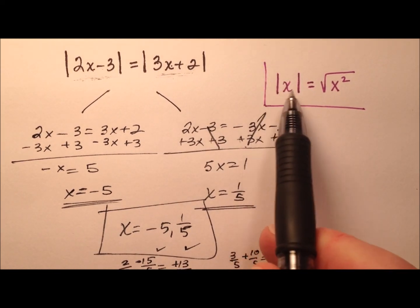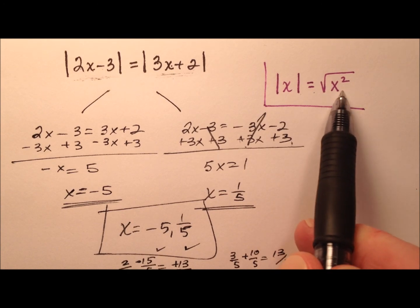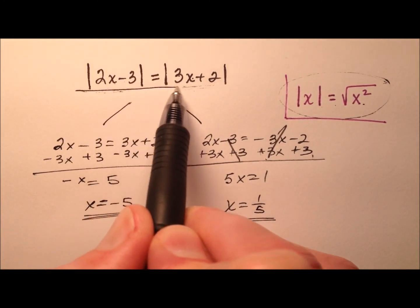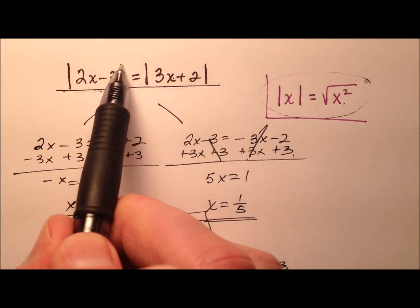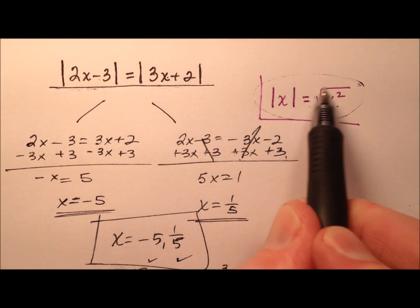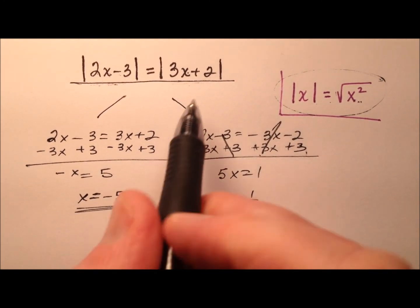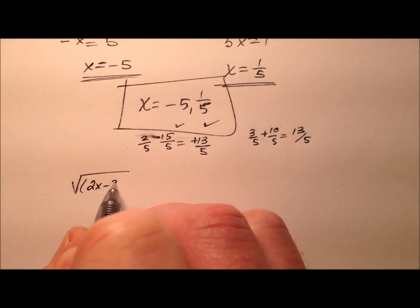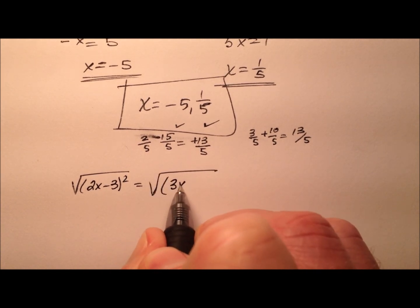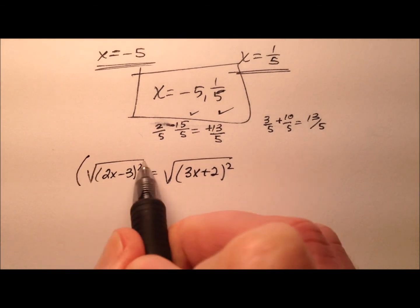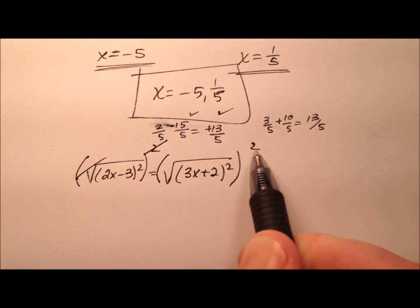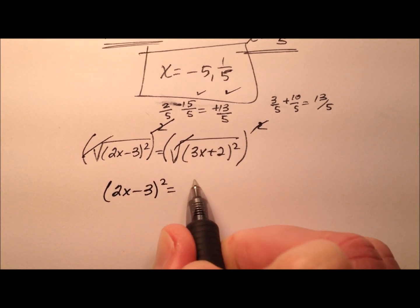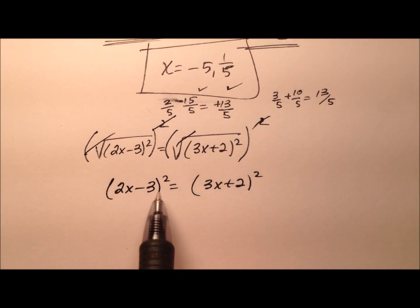Over here I have written that the absolute value of x is the same as the square root of x squared — that's a property we use. I want to take a look at using that property for this example. So instead of the absolute value of 2x minus 3, I'll write it as the square root of (2x minus 3) squared. Rewriting the equation: the square root of (2x minus 3) squared equals the square root of (3x plus 2) squared. To get rid of the radicals, let's square both sides, leaving us with (2x minus 3) squared equals (3x plus 2) squared.